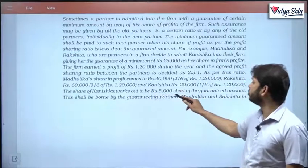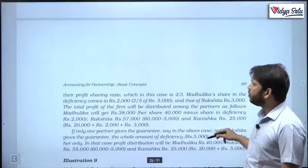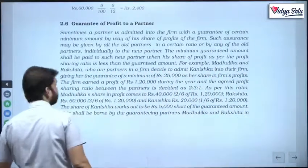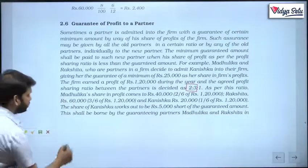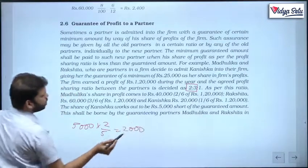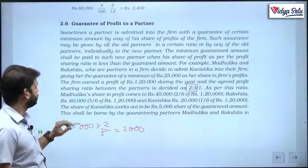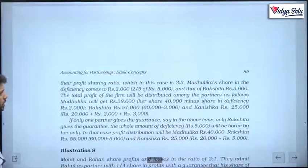Kanishka's share works out to be 5,000 short of the guaranteed amount. This shortfall shall be borne by the guaranteeing partners, Madhulika and Rakshita, in their profit sharing ratio. The profit sharing ratio between them is 2:3. So this 5,000 is divided: 5,000 × 2/5 = 2,000 from Madhulika and 5,000 × 3/5 = 3,000 from Rakshita. Therefore, Madhulika gets 38,000 (40,000 minus 2,000), Rakshita gets 57,000, and Kanishka gets 25,000 (20,000 + 2,000 + 3,000).